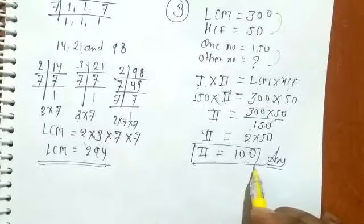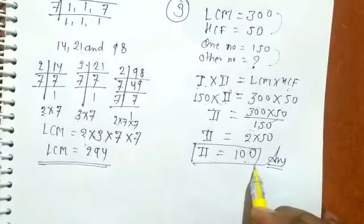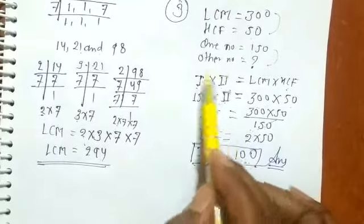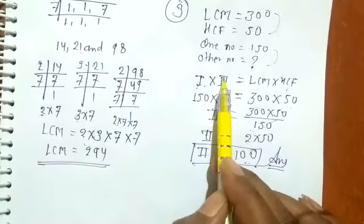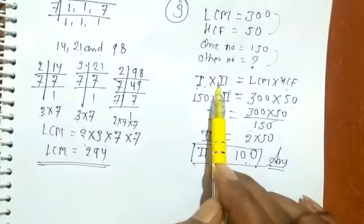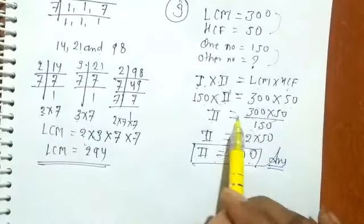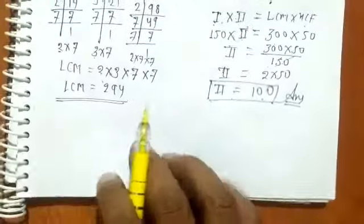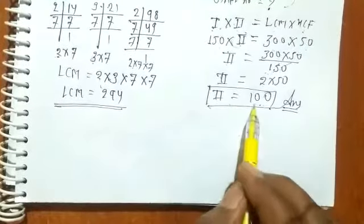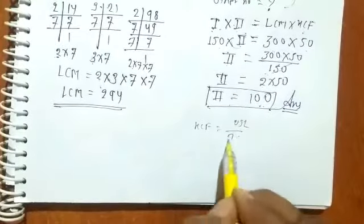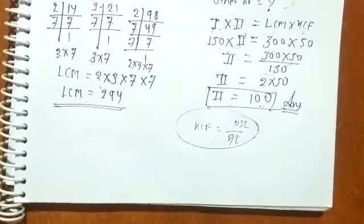Question number four: the product of two numbers is 432 and their LCM is 72; find the HCF. Using the formula — product of numbers = LCM × HCF — we get HCF = 432 ÷ 72. Solve this calculation and the result will be the HCF.